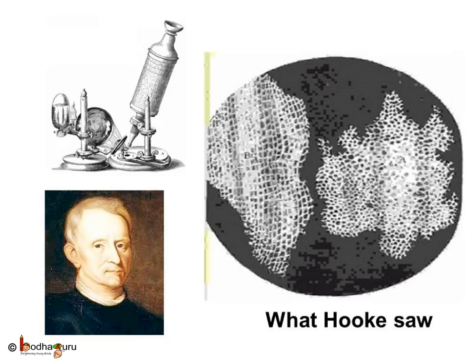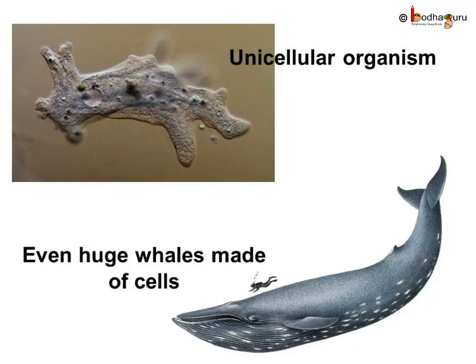But what exactly is a cell? In 1665, Robert Hooke observed a slice of cork under a microscope. The cork is actually a part of the bark of a tree. He noticed that it was made of small box-like units, each box separated from its neighbor by a wall. He coined the term 'cell' for each box. What Hooke observed as boxes or cells in the cork were actually dead cells, as the cork was made from the bark of a tree. Thus, the cell was discovered accidentally.